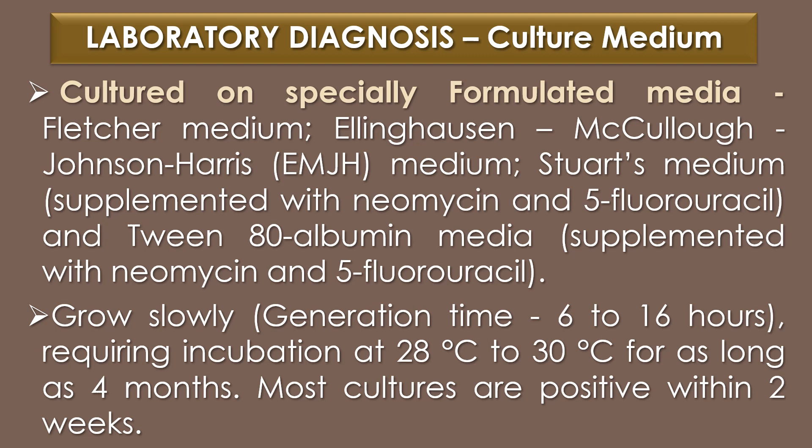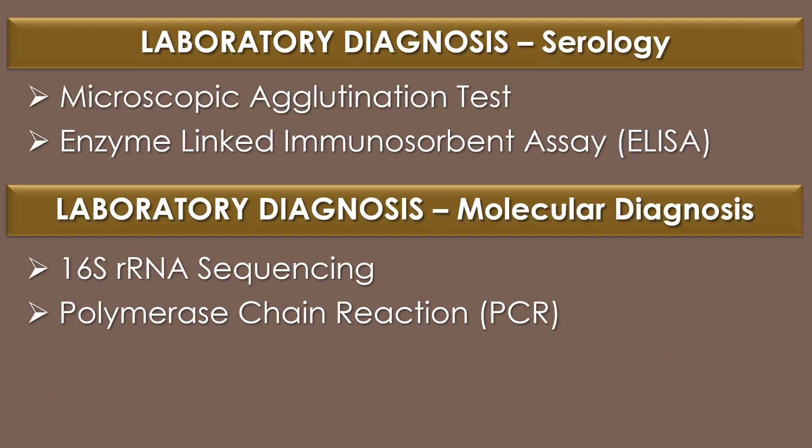Culture morphology: Leptospira introgons can be cultured on specifically formulated media such as Fletcher medium, EMJH medium, or Heienhausen-McClock-Johnson-Harris medium, and Stewart's medium supplemented with neomycin and 5-fluorouracil. Leptospira introgons grows slowly with a generation time of 6–16 hours, requiring incubation at 28°C to 30°C for as long as 4 months. However, most cultures are positive within 2 weeks. Growth of bacteria in culture is detected by dark field microscopy.